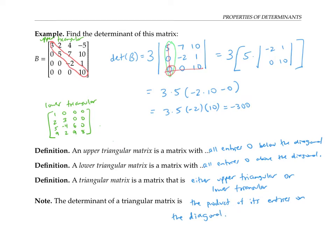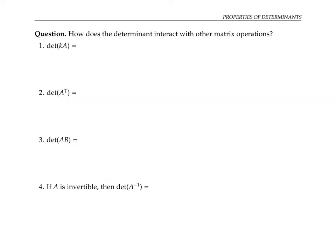That makes a triangular matrix one whose determinant is super easy to compute. Now let's move on to the main topic: how the determinant interacts with other matrix operations. Let A and B be n by n square matrices and k be a scalar. Pause the video and see if you can come up with rules for det(kA), det(A transpose), det(AB), and det(A inverse) — expressing each in terms of det(A) and det(B).